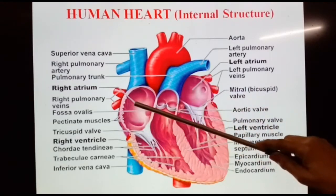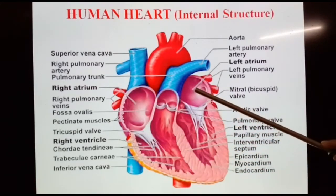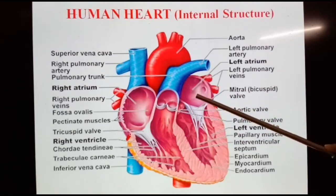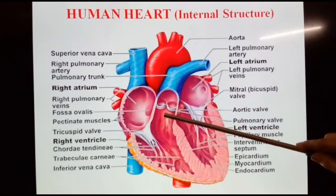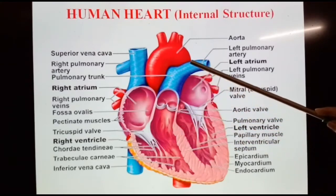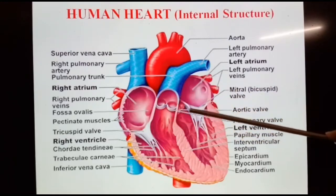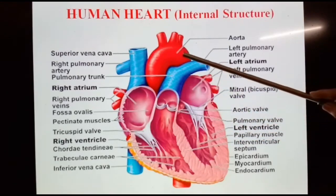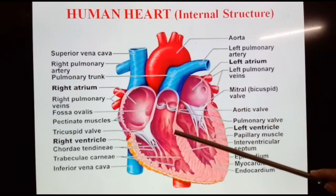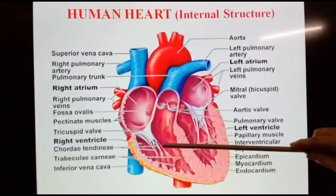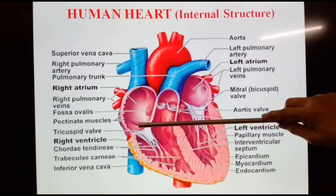The right atria receives deoxygenated blood from the superior and inferior vena cava. The left atria receives blood from the two pulmonary veins and this blood goes into the left ventricle. The two main aortas emerge from the right and left ventricle. The pulmonary aorta emerges from the right ventricle and goes to the lungs for oxygenation of the blood. The systemic aorta emerges from the left ventricle and circulates oxygenated blood throughout the whole body. These are the chordae tendineae, which attach with fibers giving strength to the wall to prevent backflow of blood.